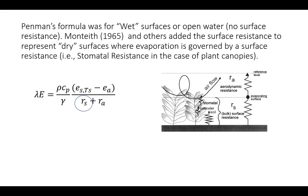Penman's formula is for a wet surface or open water, so he had no surface resistance in his original equation. Monteith in 1965, along with others — and Monteith acknowledges a graduate student may have proposed it simultaneously — recognized that adding a surface resistance to the formula would extend it to dry surfaces: bare soil, vegetated surfaces, forests. For plant canopies, that RS represents primarily the stomatal resistance and leaf area index, which we studied previously.